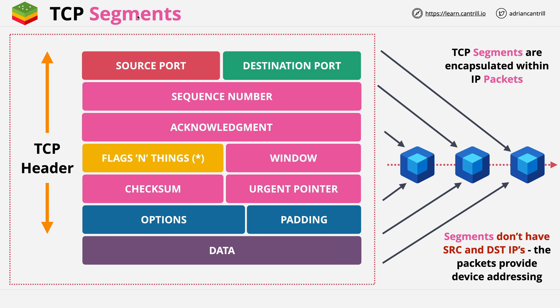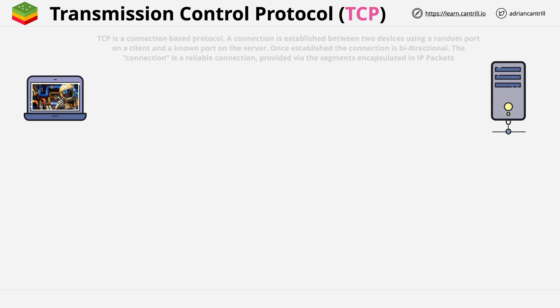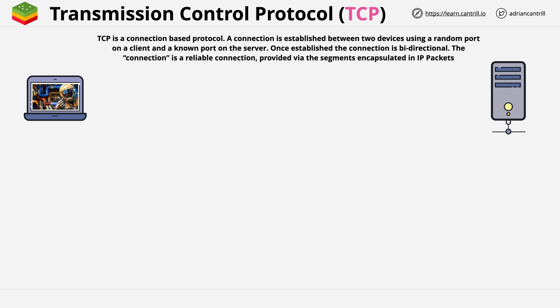Now that you know the structure of a segment, let's take a look at how it's used within TCP. Let's take a few minutes to look at the architecture of TCP. TCP, like IP, is used to allow communications between two devices. Let's assume a laptop and a game server. TCP is connection-based, so it provides a connection architecture between two devices, and let's refer to these as the client and the server.